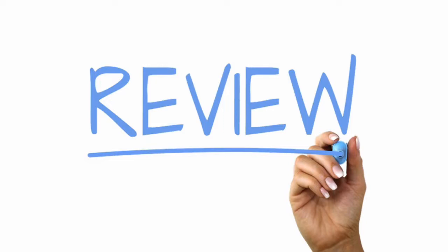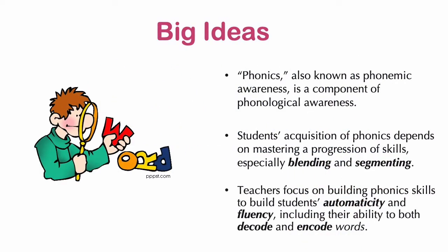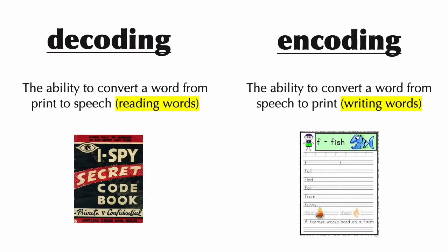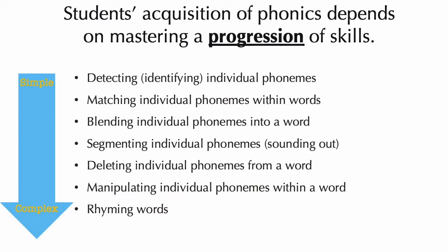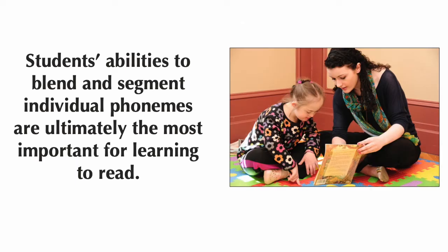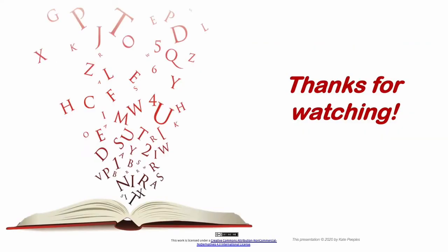Now let's review all the information covered in this video. We began by identifying three big ideas about the important role of teaching and learning phonics skills in early literacy. We also defined decoding and encoding, saw how phonics skills progress from simple to complex, and mentioned examples of each skill in this progression. Finally, we demonstrated why phoneme blending and segmenting skills are the most important for learning to read. That's all for this CAP on phonics skills and instruction.